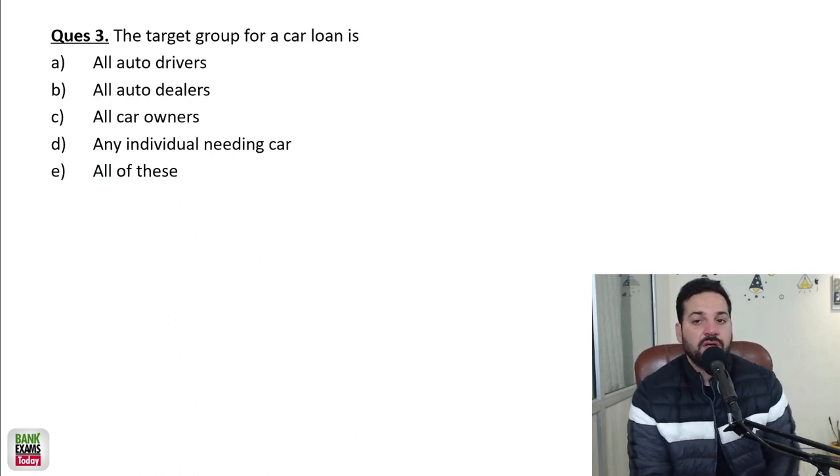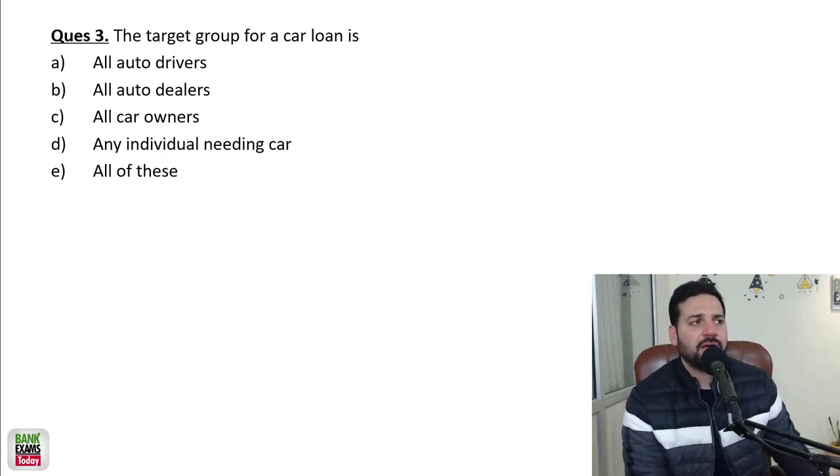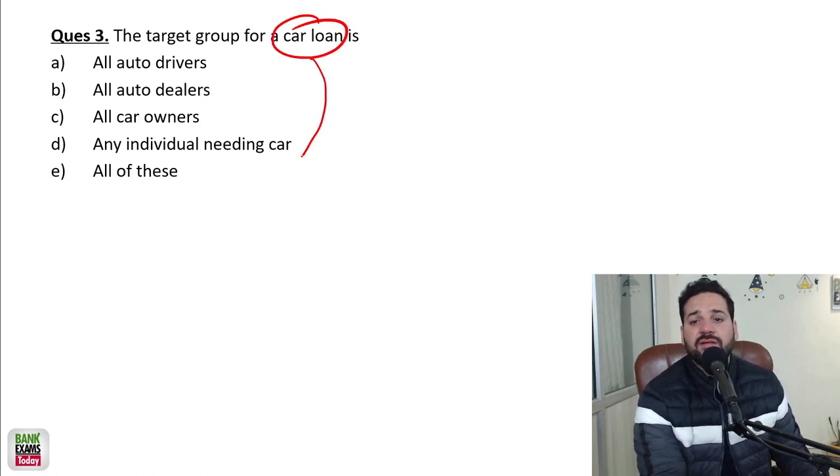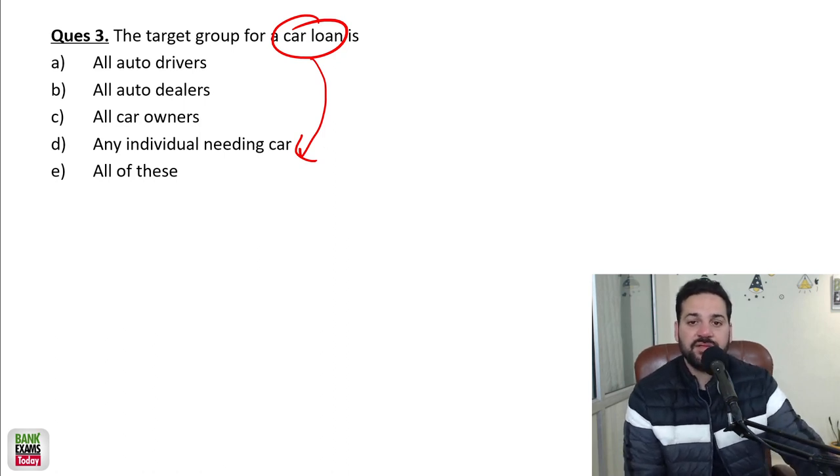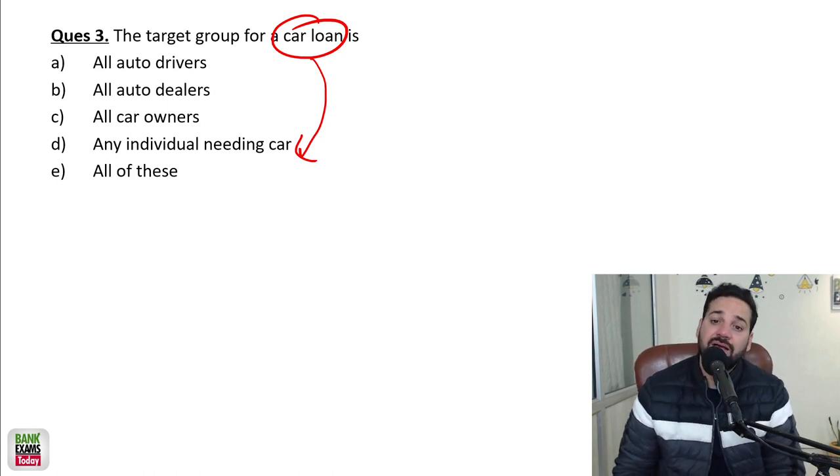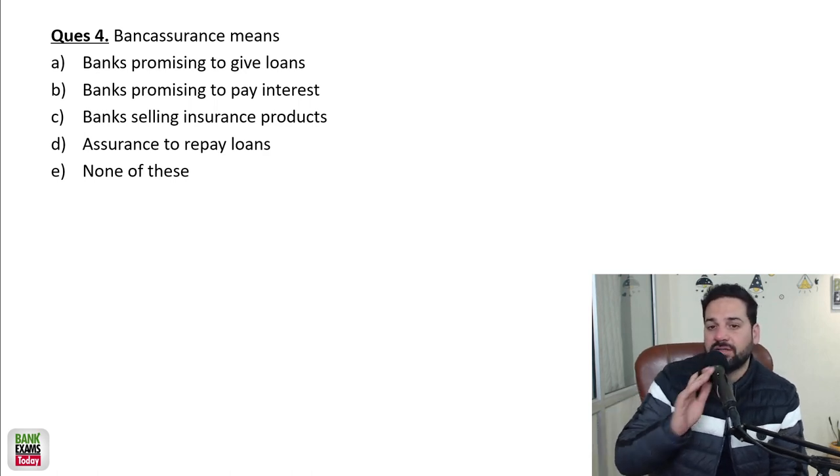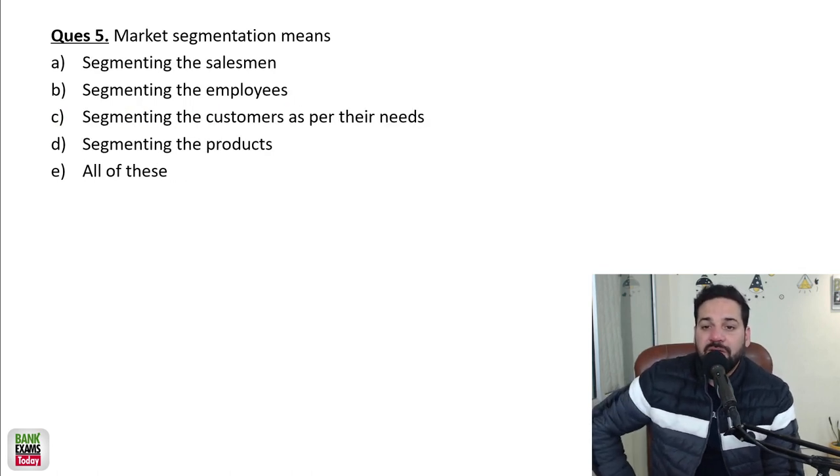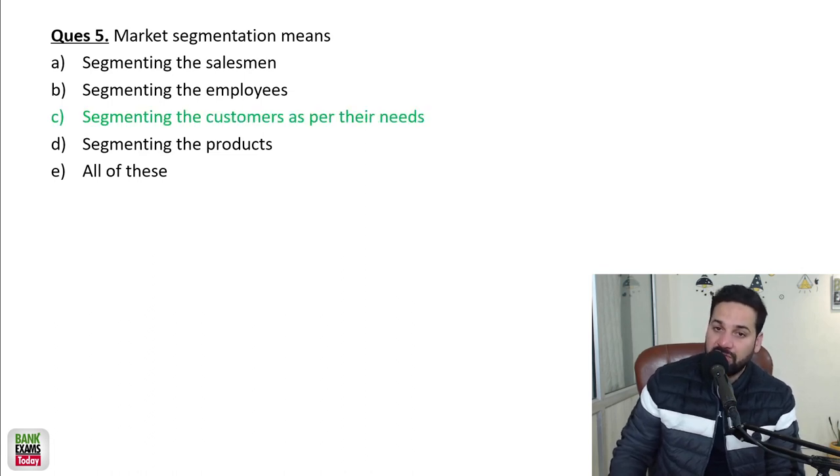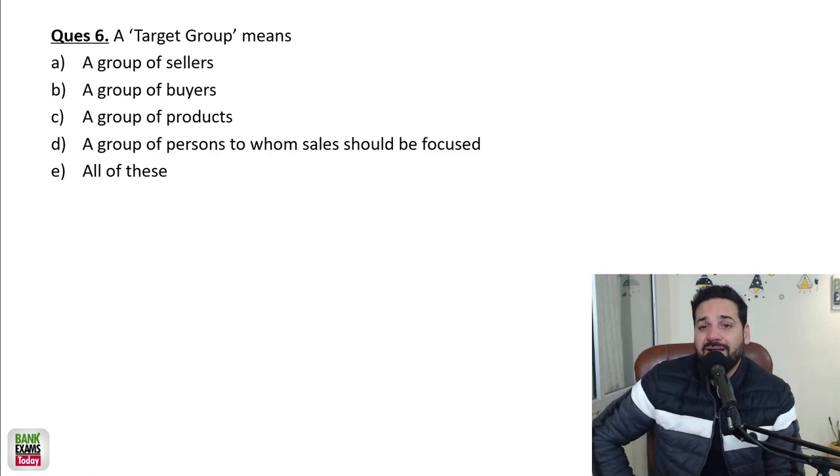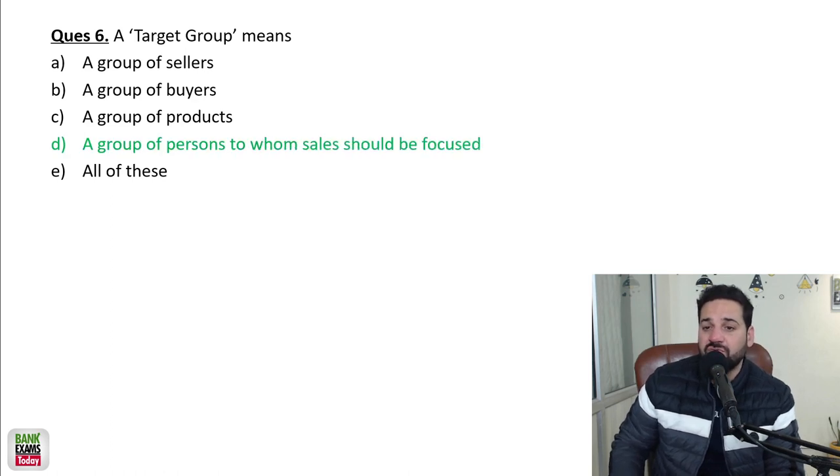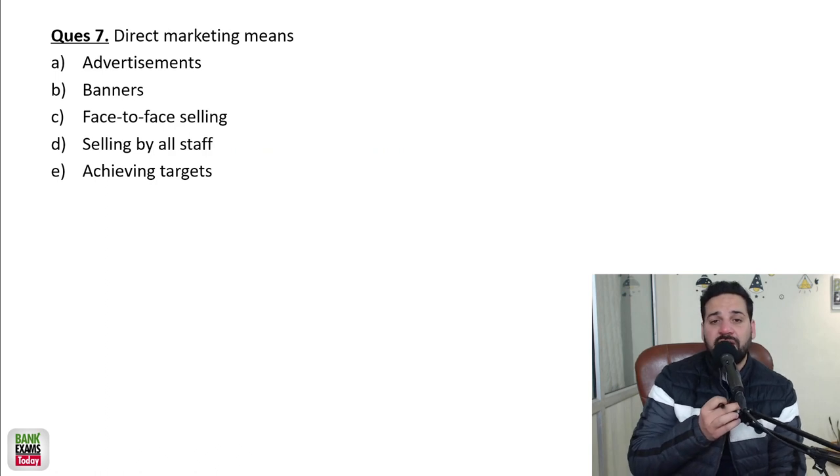A target group for a car loan - what is a target group? Target group means the target market for car loans. Car loan kaun kharidega? Somebody who needs a car. Obviously not all auto drivers. Market segmentation means segmenting the customers as per their needs, the features, characteristics, demographics. What do you mean by a target group? Target group is a group of persons or customers to whom sales should be focused on. That is target market or target group. Direct market means face-to-face selling. Face-to-face selling means direct marketing.